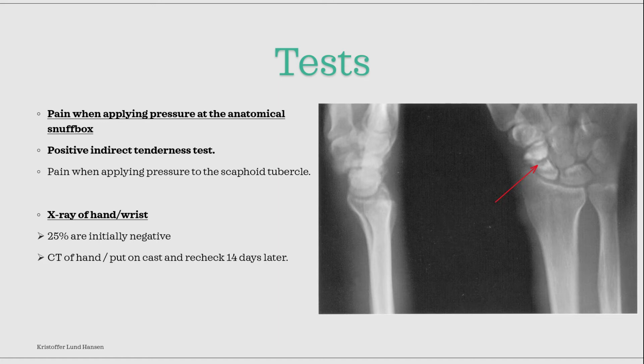It is important to remember that about 25% of early x-rays are negative for a scaphoid fracture. If there is still a clinical suspicion of a scaphoid fracture, there are two different approaches that can be done. One is to do a CT of the hand, as CTs are much better at showing small fractures. The other is to treat it as an undislocated fracture. A dislocated fracture will always be seen on an x-ray. To treat an undislocated fracture, you put on a cast and then do another x-ray 14 days later.